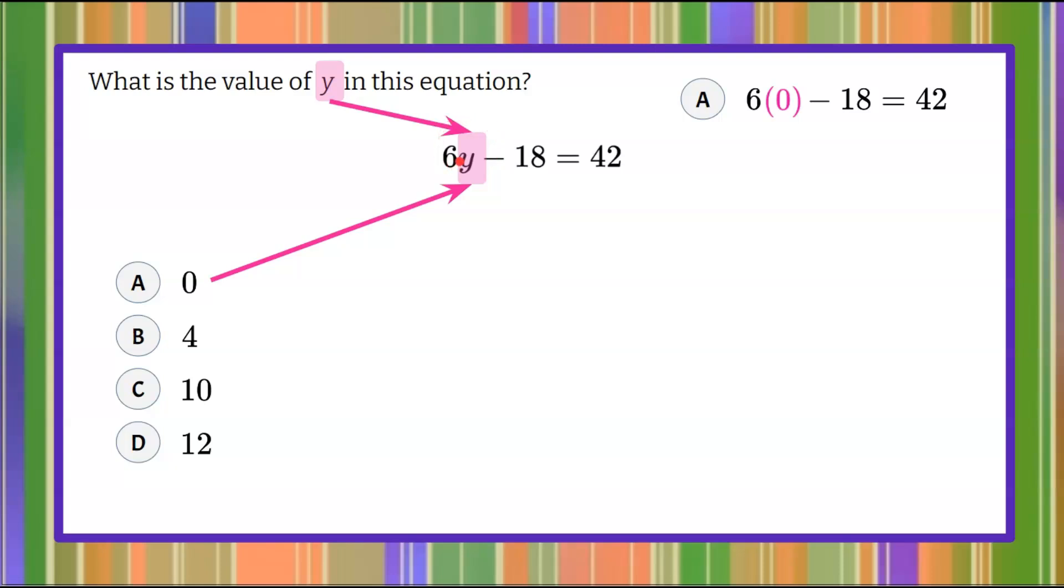This 6y has an invisible multiplication sign between the 6 and the y - this is 6 multiplied by y. 6 multiplied by 0 is 0. So we're left with negative 18 equals 42, which is incorrect. Those are not equivalent values. Therefore, answer choice a can be eliminated.